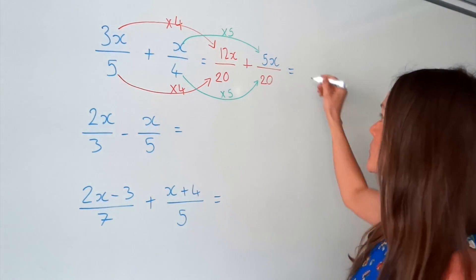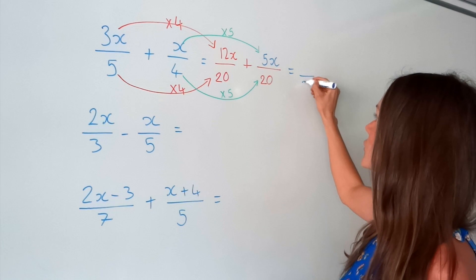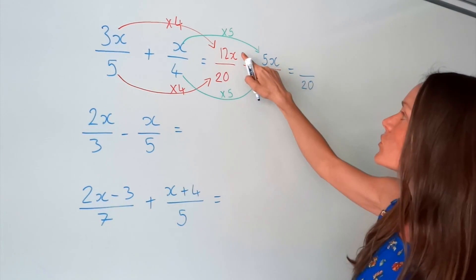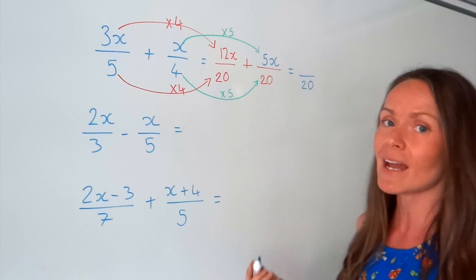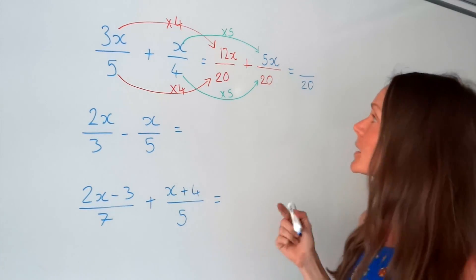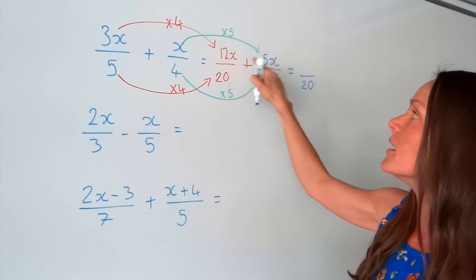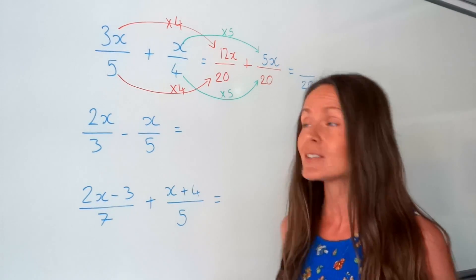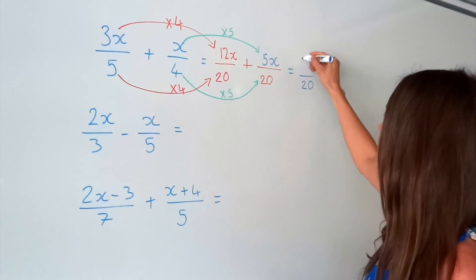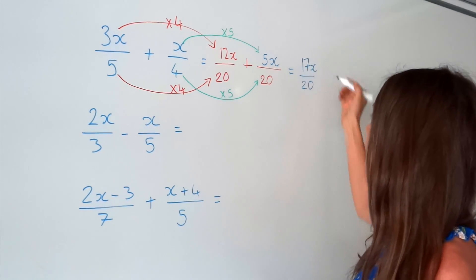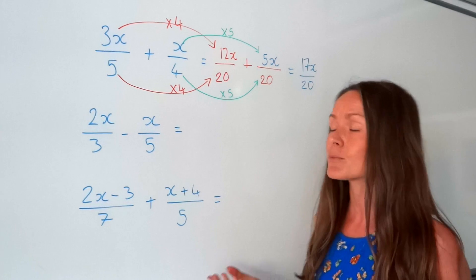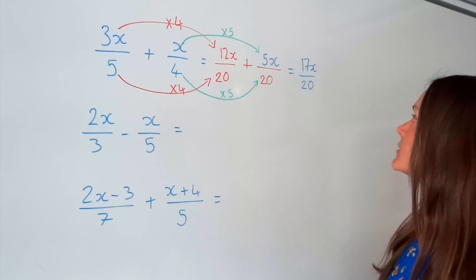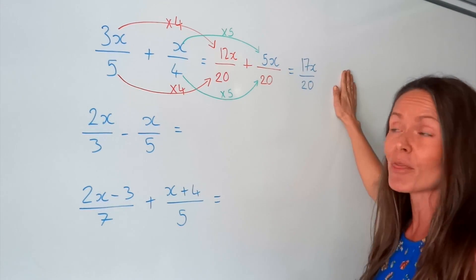Remember, when you're adding or subtracting, the denominator doesn't change. So this one is still the same. But the top two numbers here, we can add them together — and we can actually simplify these two terms. Because 12x plus 5x is 17x. And that's my final answer. I can't simplify this fraction because there's no common factor in 17 and 20. So I'm done with that one.